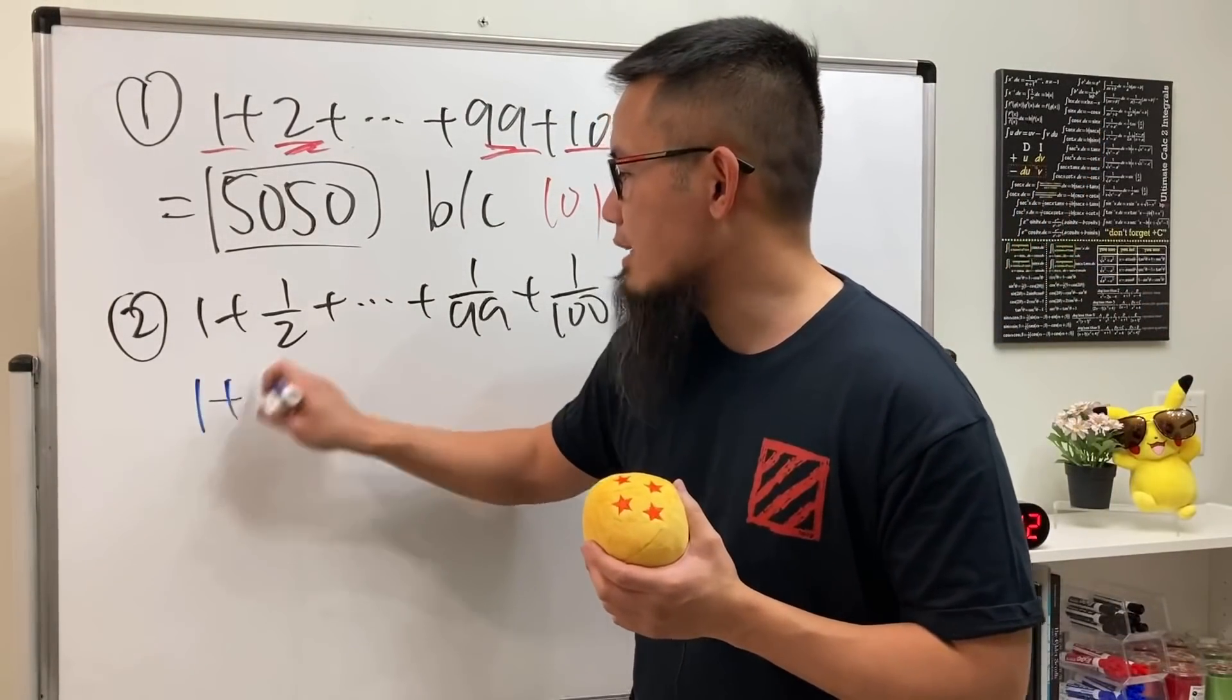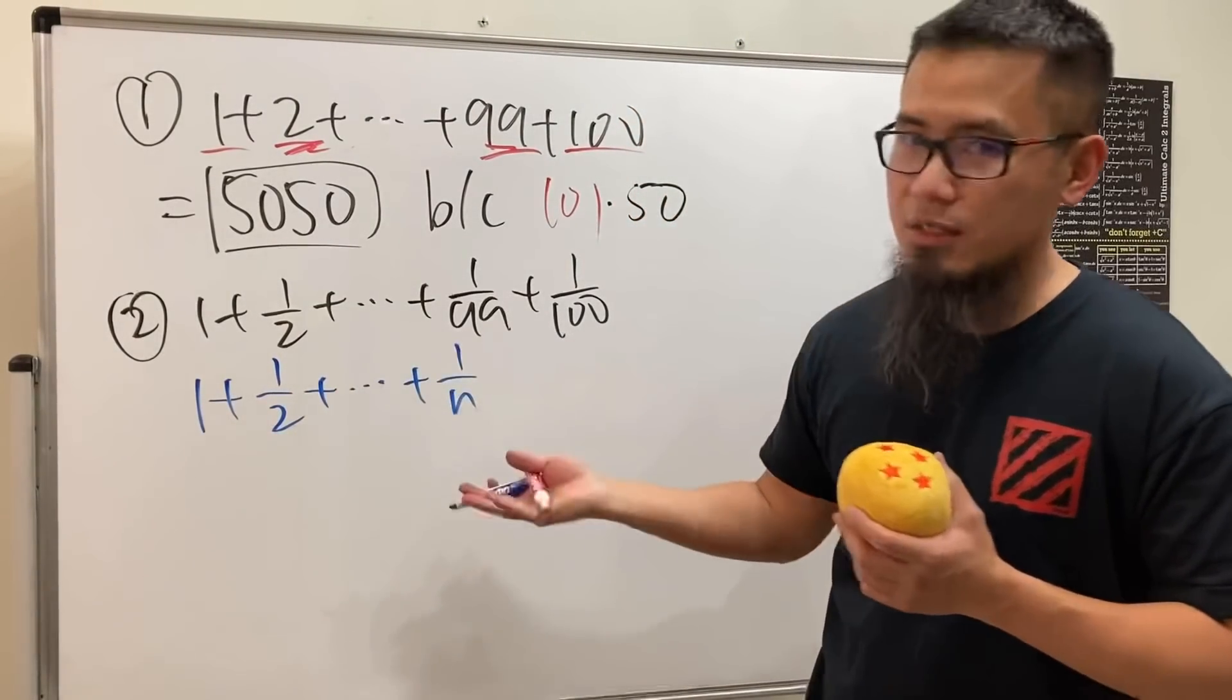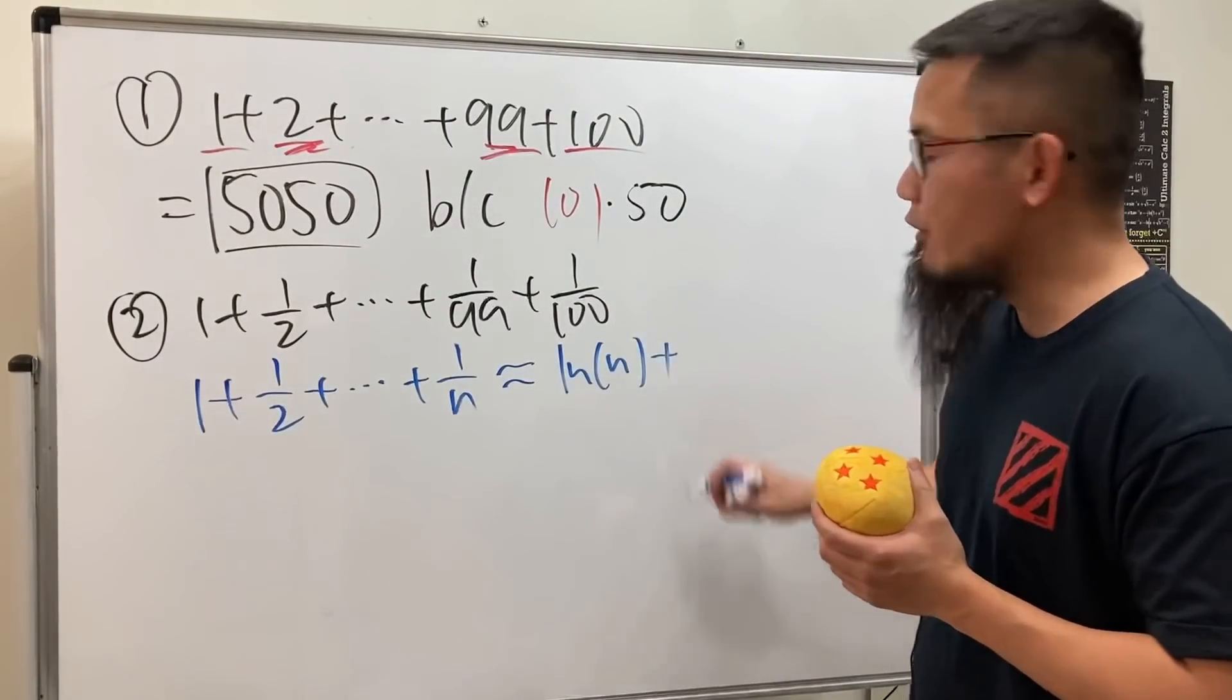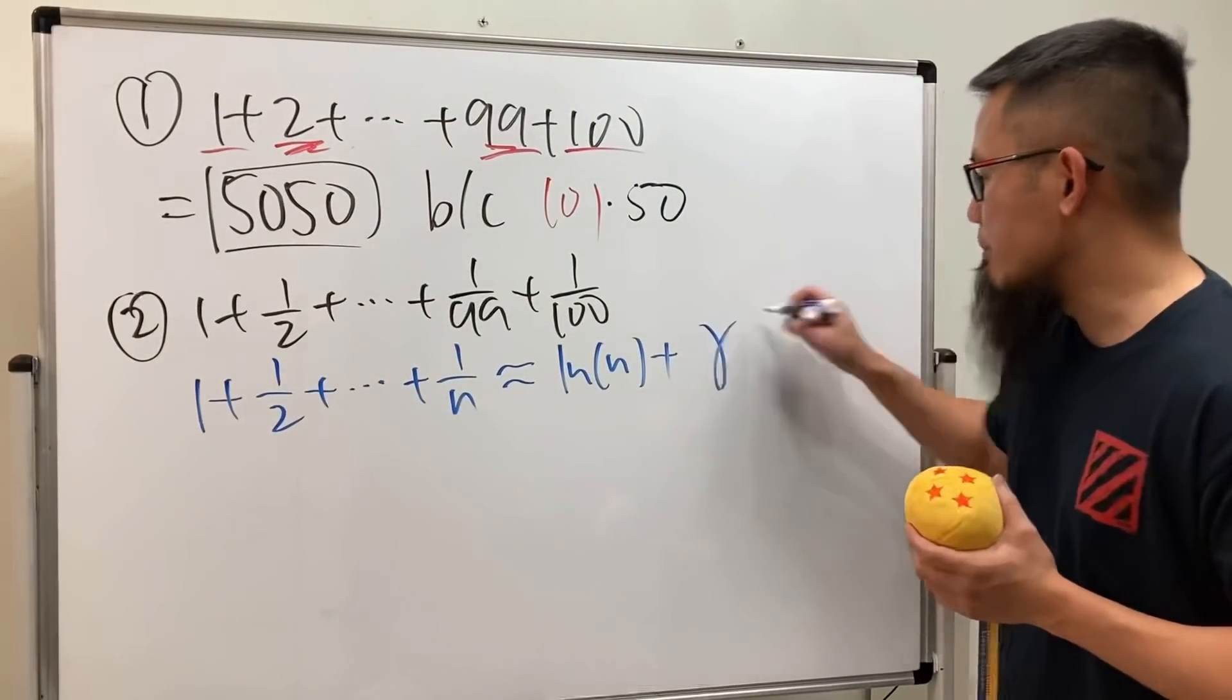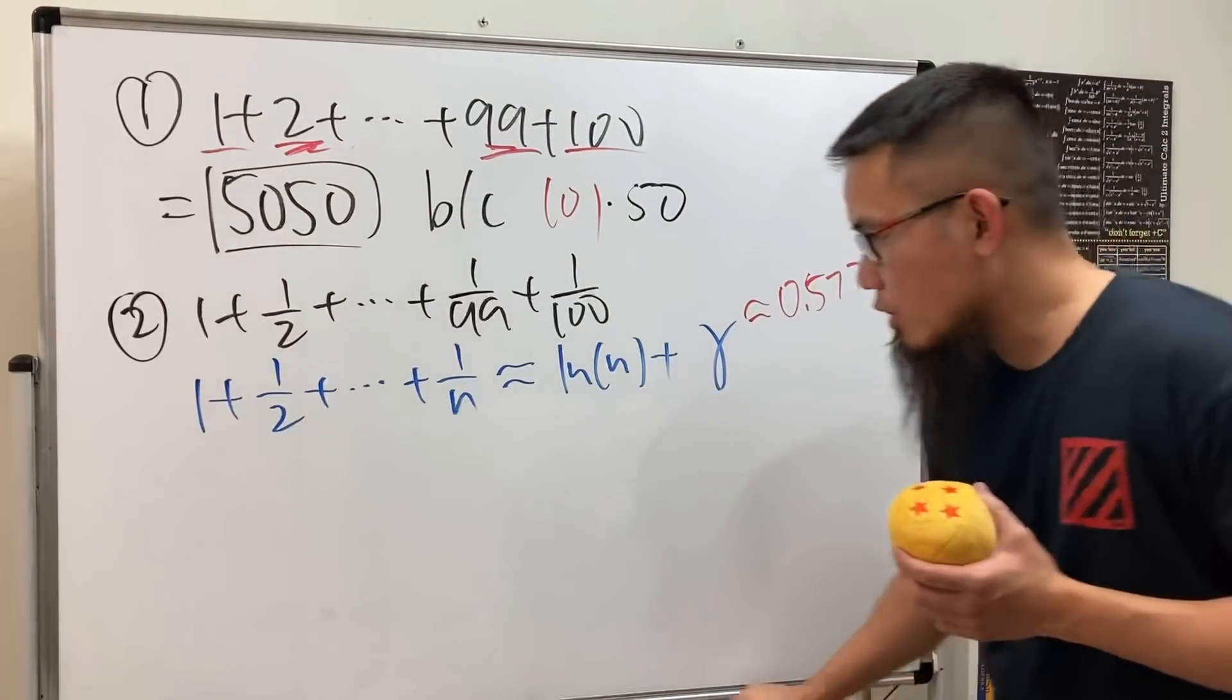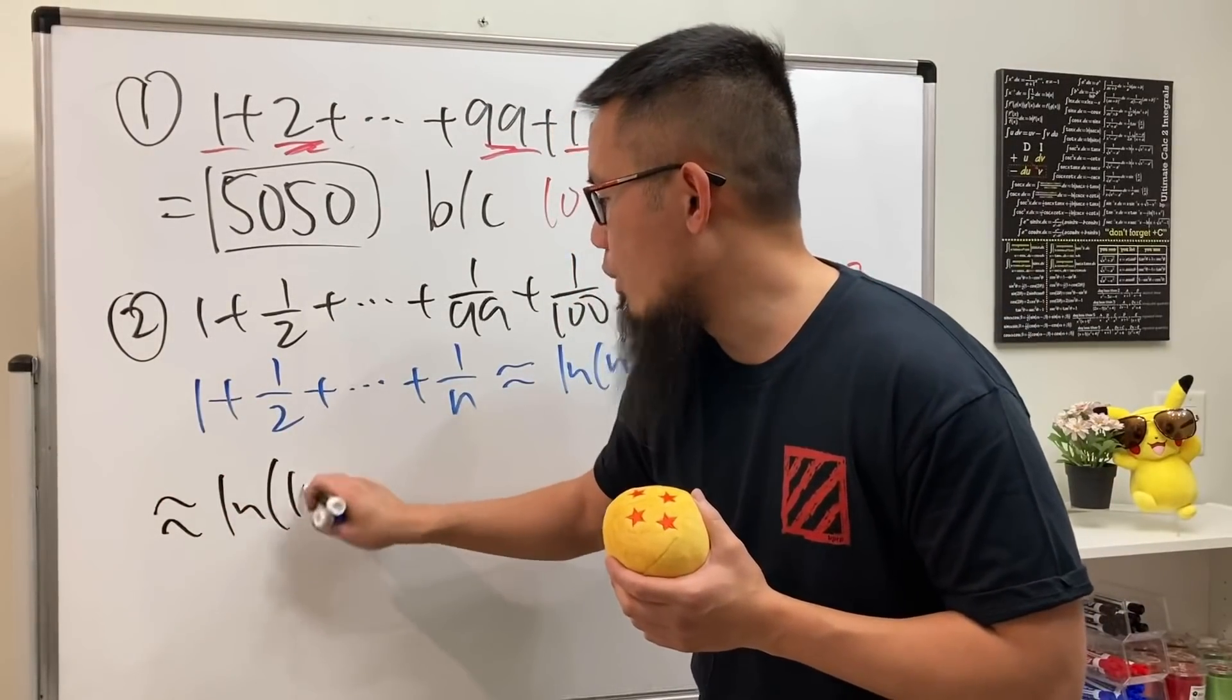Let me tell you guys that 1 plus 1 over 2 plus... plus 1 over n, if n is equal to a large number, then this right here is approximately ln(n) plus a very famous number named the Euler gamma. This right here is approximately 0.577. So this right here is actually approximately equal to ln(100) plus gamma.